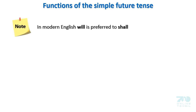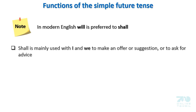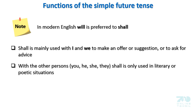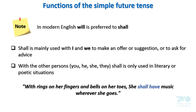In modern English, will is preferred to shall. Shall is mainly used with I and we to make an offer or suggestion, or to ask for advice. With the other persons — you, he, she, they — shall is only used in literary or poetic situations. For example: 'With rings on her fingers and bells on her toes, she shall have music wherever she goes.'